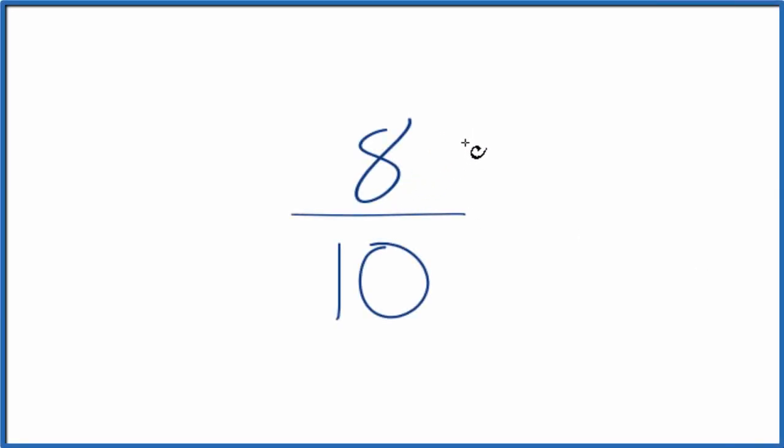Let's write three equivalent fractions for 8 tenths. What we're trying to do is find another fraction that has the same value as 8 divided by 10, has the same decimal value. It's just written differently.